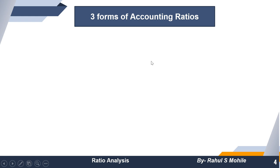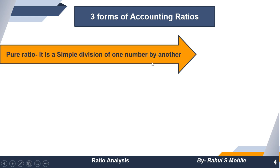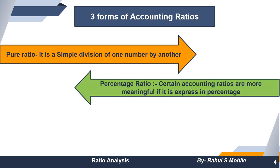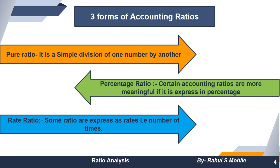The three forms of accounting ratios are: first, pure ratio — where one number is divided by another to get the answer; second, percentage ratio — where the result is multiplied by 100 and expressed as a percentage, giving a clear picture of the company's financial position; and third, rate ratio — expressed in number of times, such as stock turnover ratio, creditors turnover ratio, and debtors turnover ratio.